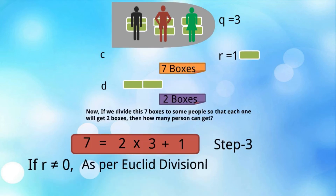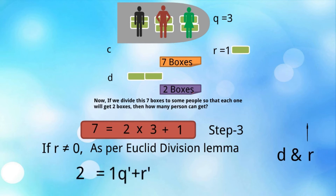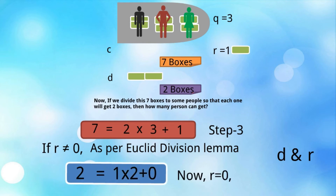Since r is not equal to 0, we continue. As per Euclid's Division Algorithm, the next step uses d = 2 and r = 1. Applying the lemma with q′ = 2 gives remainder 0: 2 = 1 × 2 + 0. Now r = 0, so by Euclid's Division Algorithm, 1 is the divisor and is the HCF.